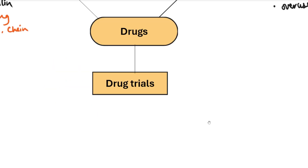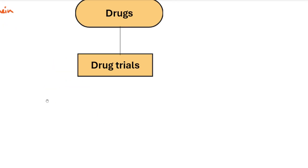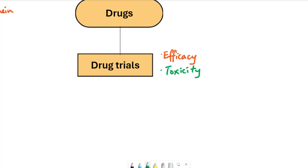Any medicine or vaccine nowadays must go through a rigorous process of drug trials before being released to the public. There are four key things tested: first, efficacy — whether the drug actually works for its intended purpose. Second, toxicity — whether the drug makes a person sick, kills healthy cells, or causes serious illness. If a drug is toxic it will not be used, or only as a last resort.